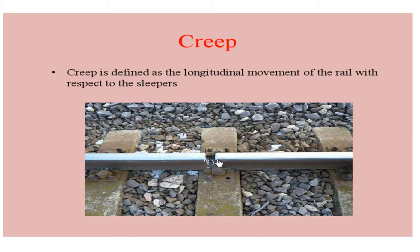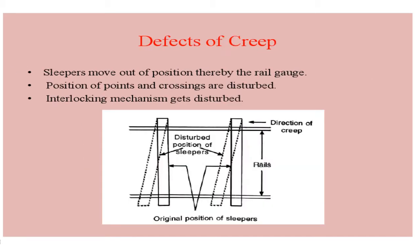So this is basically what creep is. Now coming to the defect of creep — what happens is the sleepers will be intact, but because of the creep, the position of the sleepers moves out. In the figure, you can see this is the actual position of the sleepers. Since creep is formed, this is the direction of creep, and because of this, the position of sleepers is getting disturbed.